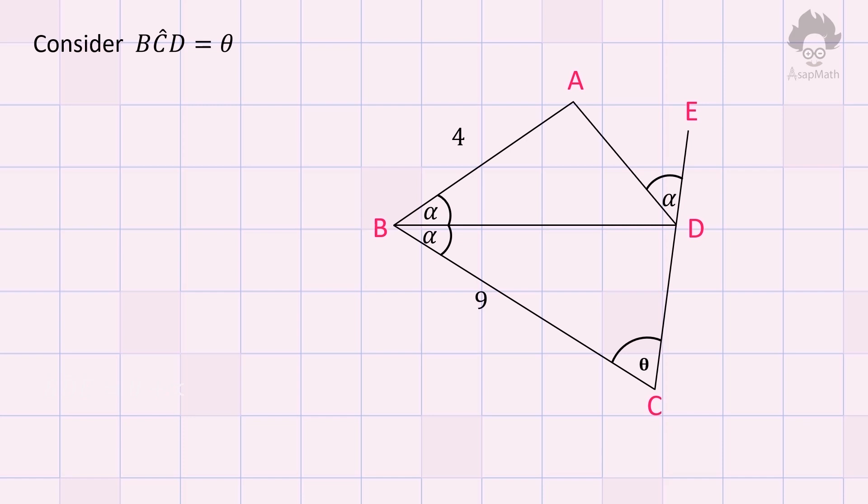Consider triangle BCD. Here we know two angles: CBD and BCD. Angle BDE is an exterior angle of triangle BCD. We can find that angle BDE is equal to alpha plus theta, because the exterior angle of a triangle is equal to the sum of interior opposite angles.